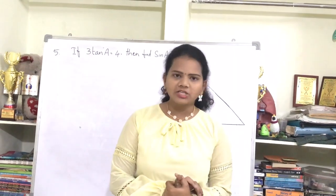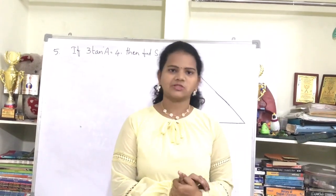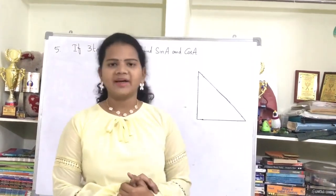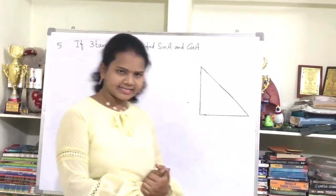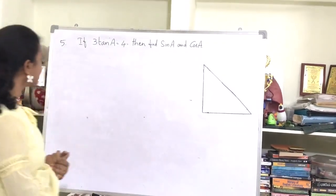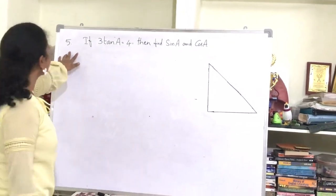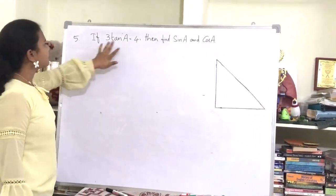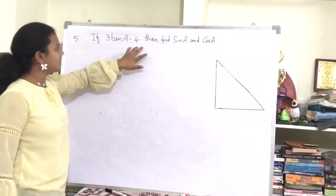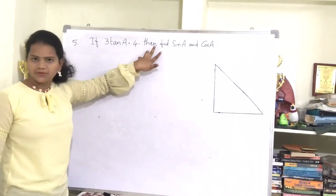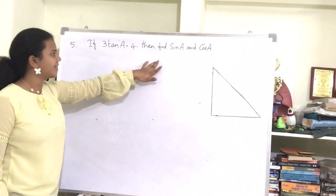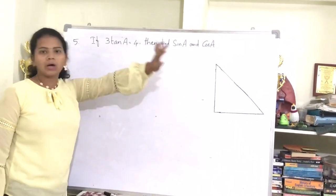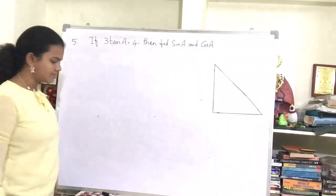Hey guys. Today I am here to explain class 10th math trigonometry exercise 11.1, 5th question. The question is: if 3 tan A equals 4, then find sin A and cos A.